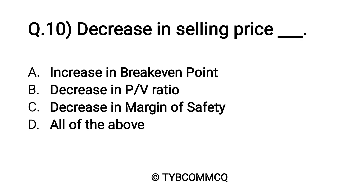Question number ten: Decrease in selling price dash dash. Option A: increase in breakeven point, Option B: decrease in PV ratio, Option C: decrease in margin of safety, and Option D: all of the above. Yes, the correct option is Option D — all of the above.